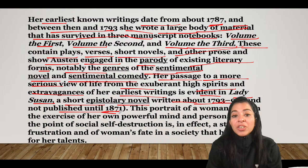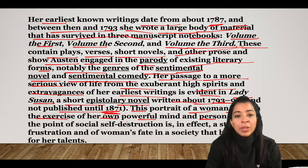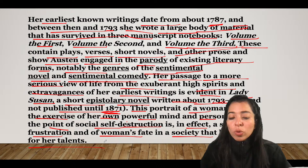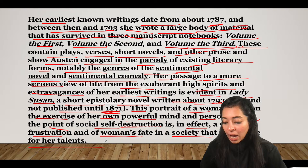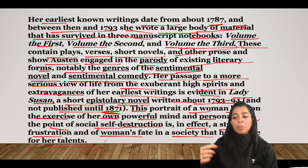Lady Susan was not published until 1871, years after Austen's death in 1817. This portrait of a woman bent on exercising her own powerful mind and personality — to the point of social self-destruction — is in effect a study of frustration and a woman's fate in a society that has no use for her talents. Lady Susan is an epistolary novel and one of Austen's earliest works, though it was published very late.